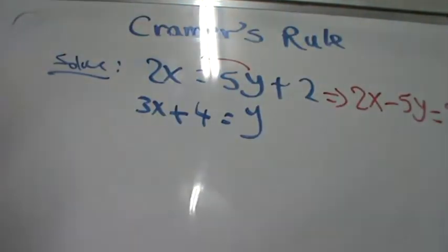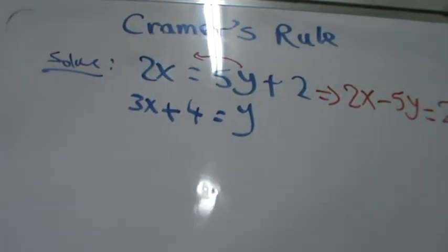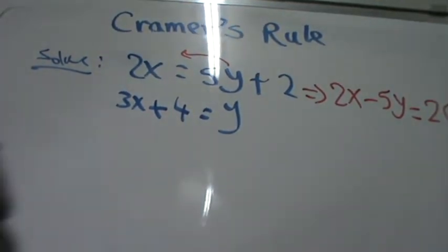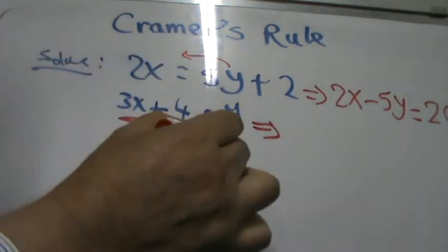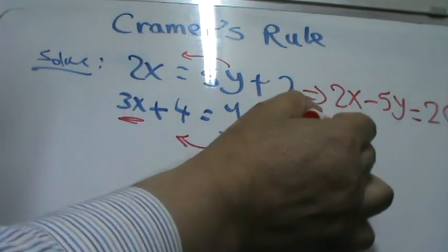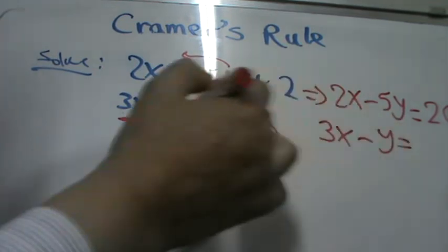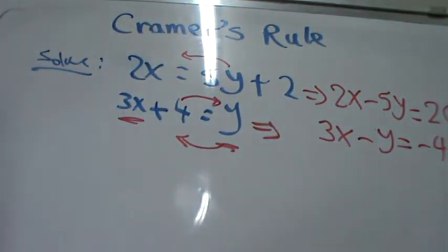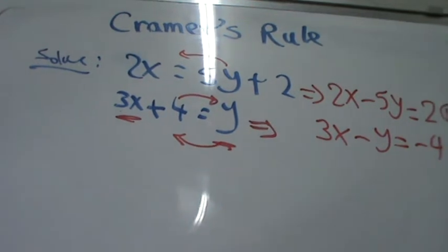For the second equation, take y to the left side and move 4 to the right side, changing signs: 3x minus y equals negative 4. Now you have both equations in standard form: 2x minus 5y equals 2, and 3x minus y equals negative 4.